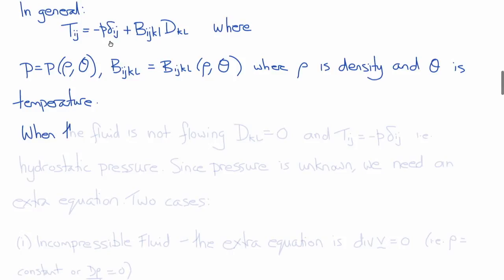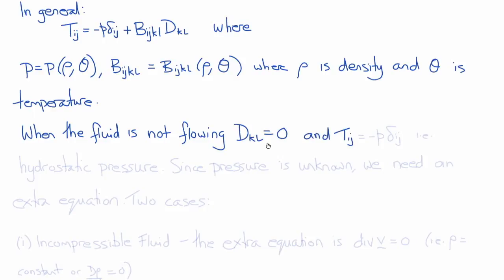Now, why did we separate out the hydrostatic pressure P? Well, that's because when a fluid is not flowing, D_kl, the rate of deformation, is equal to zero. But there can still be stress in a non-flowing fluid, and that stress is the hydrostatic pressure minus P. Therefore, the stress tensor in a fluid that isn't flowing would be minus P on the diagonals, or T_ij is equal to minus P delta_ij.